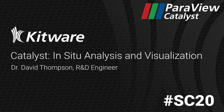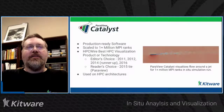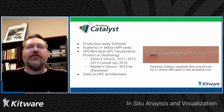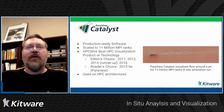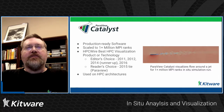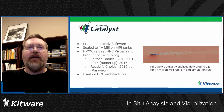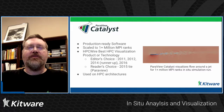Hi and welcome to the Catalyst overview at SC20. What is Catalyst? It's a framework that comes with ParaView that you can use inside your simulation to perform analysis and visualizations while your simulation is running, using all of the power of ParaView. It's production ready, it's been scaled to over a million MPI ranks, it's deployed on clusters across the world, and it's won several awards.